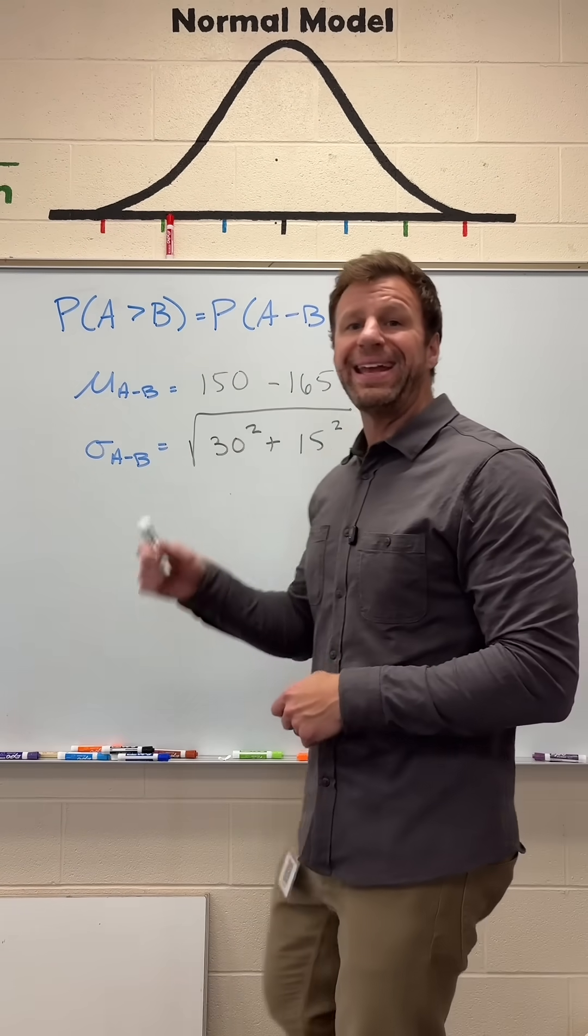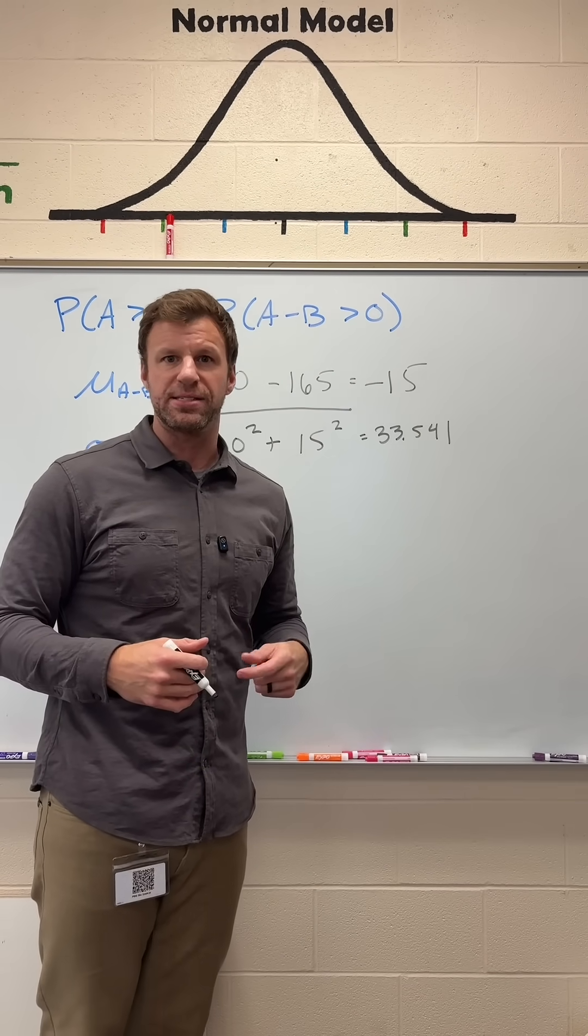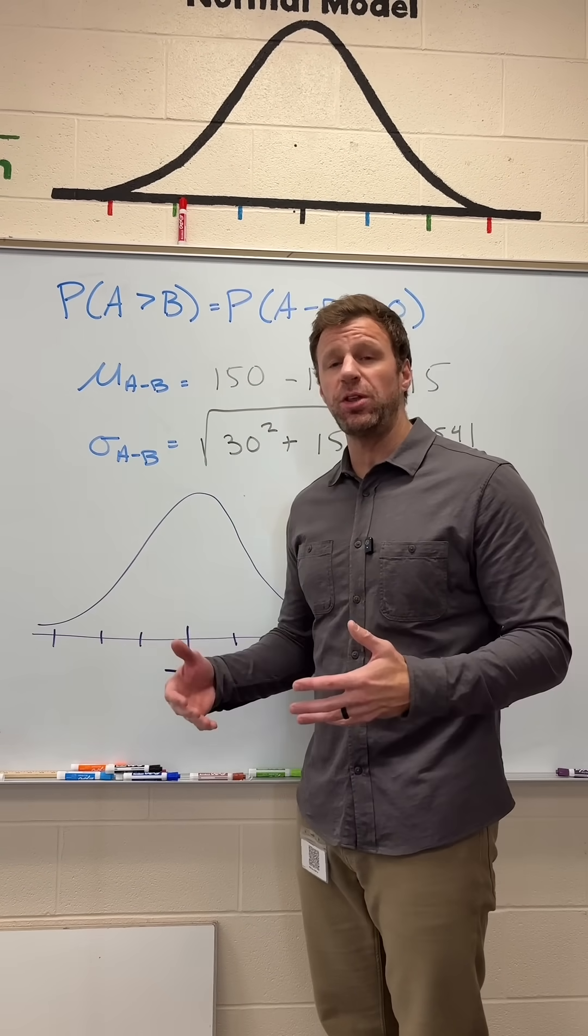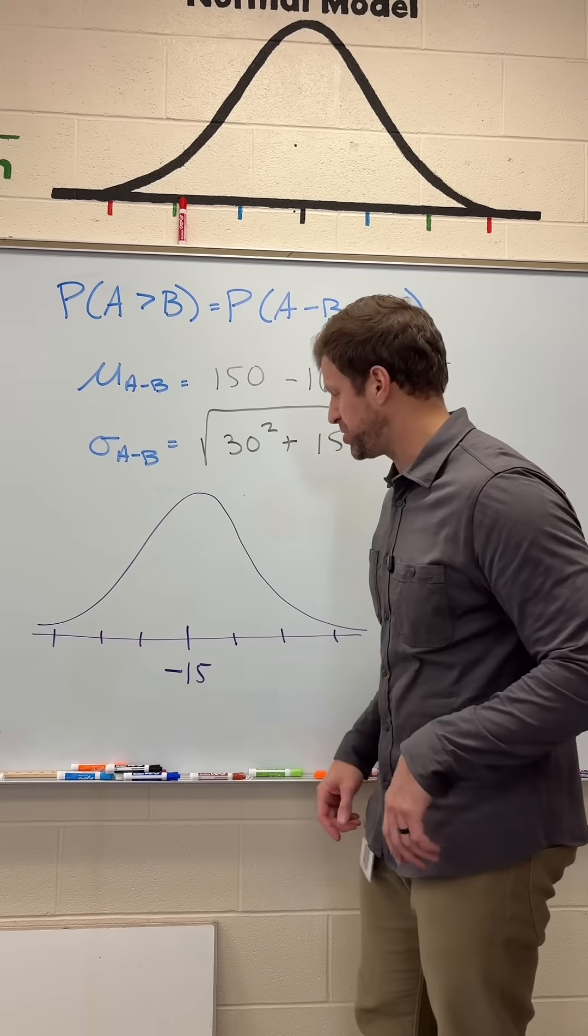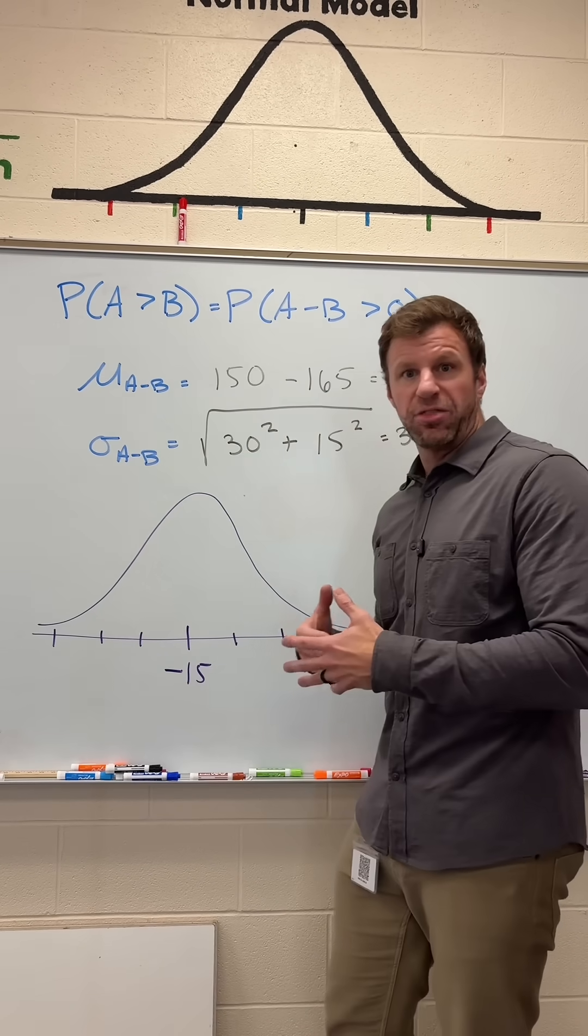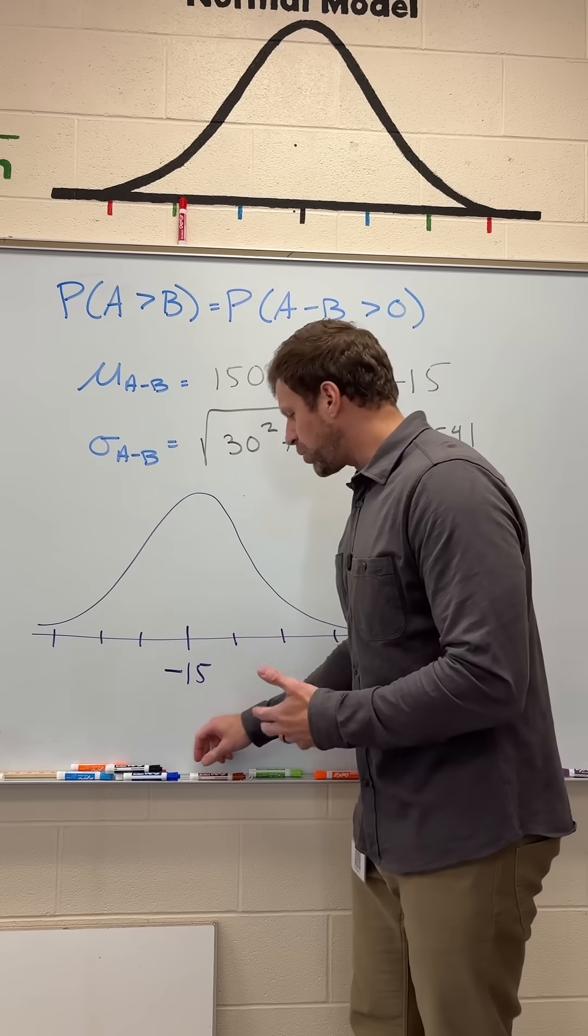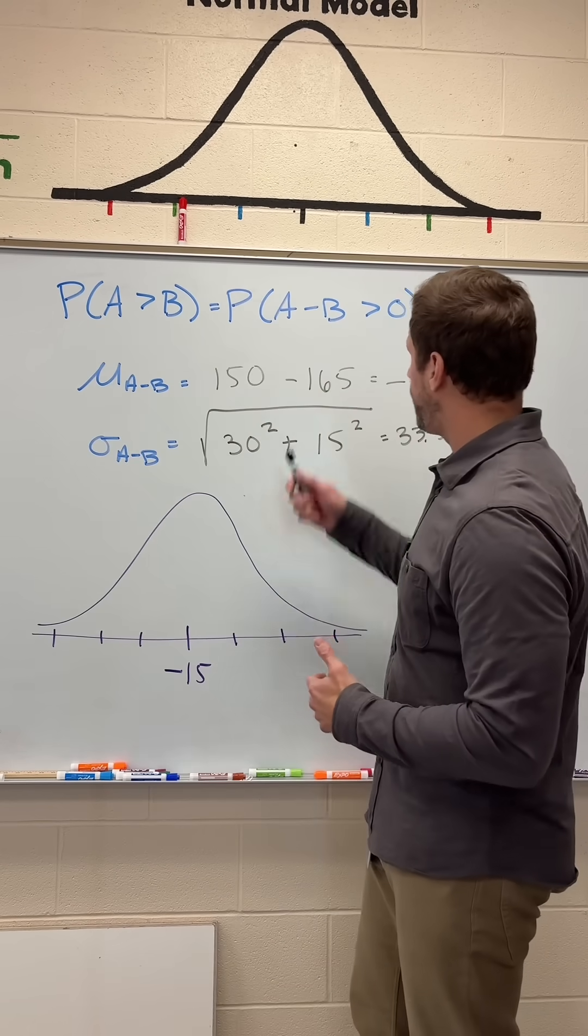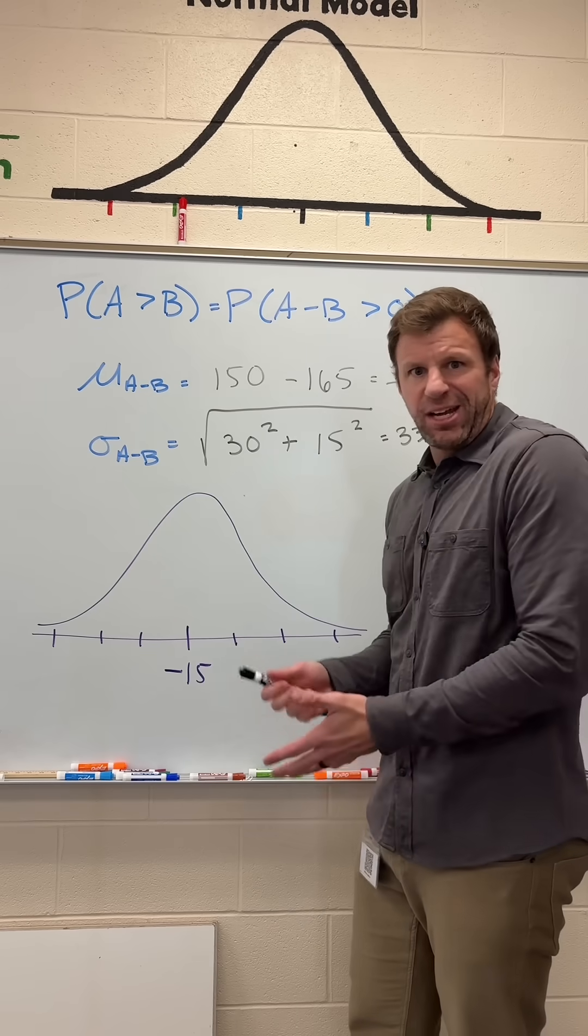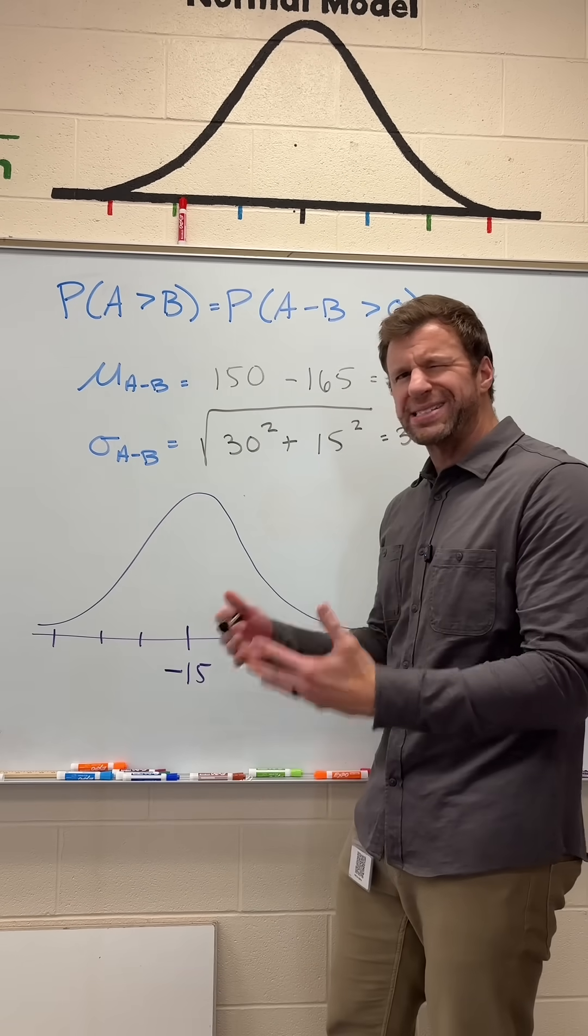So now that we know the mean and the standard deviation for what we're looking for, we have to create a model that represents this. Since Andy and Bob scores each fall in normal distribution, the difference between their scores will also fall in normal distribution. So here is our model, right smack dab in the middle is the mean, the difference that we expect between Bob and Andy, and that's negative 15. Now the question is where does zero fall? Because we're trying to find the probability that the difference is greater than zero. That's negative 15, where's zero? Well, zero is obviously going to be to the right, but where exactly is it going to be?